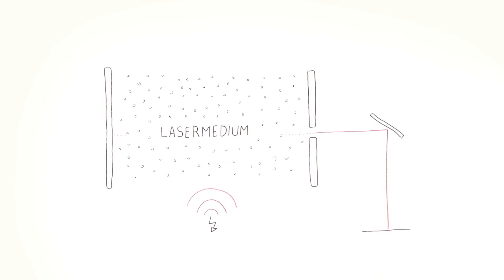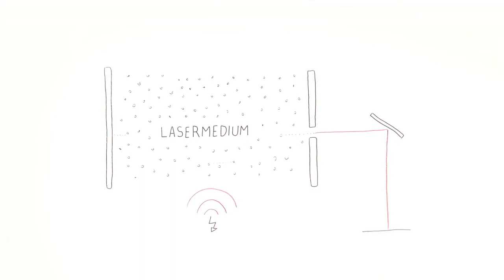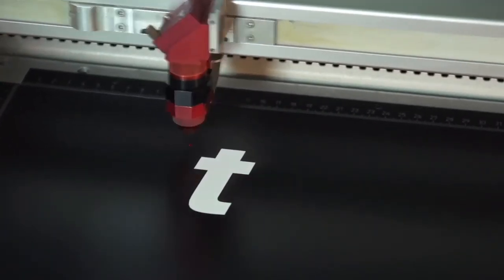This beam can leave the laser through the partially transmissive mirror, and is directed onto the material, where it engraves, marks, or cuts the desired motif.